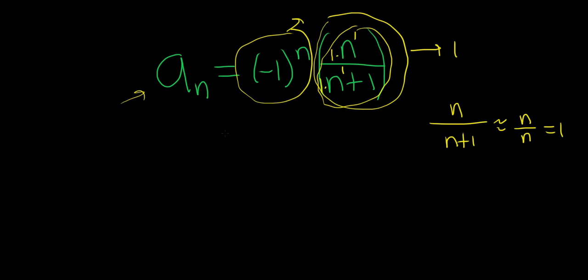Now this here oscillates right, this goes back and forth. So basically what's going to happen is that this whole thing will be DNE so when you take this limit.